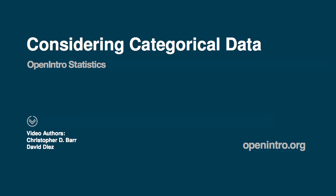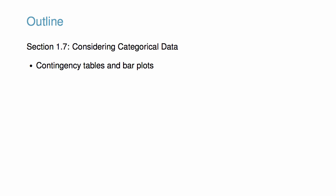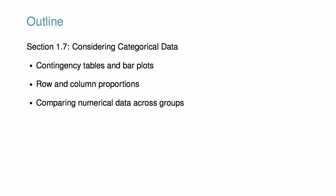This video accompanies the discussion of summarization and visualization techniques for considering categorical data in open interest statistics. We will begin by being introduced to contingency tables and bar plots, and then learn about row and column proportions. Towards the end of the video, we will consider a few approaches for comparing numerical data across groups.